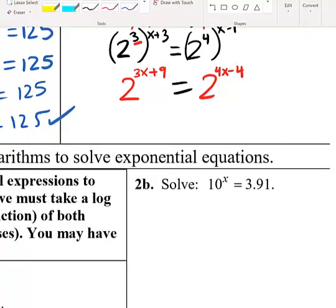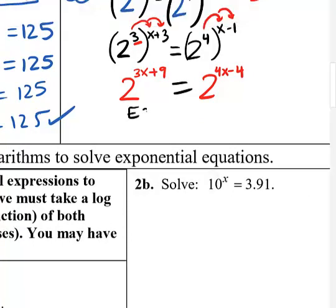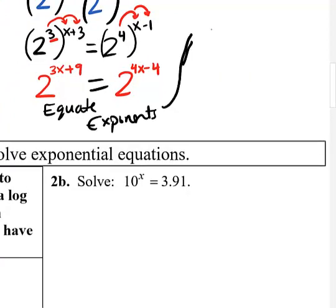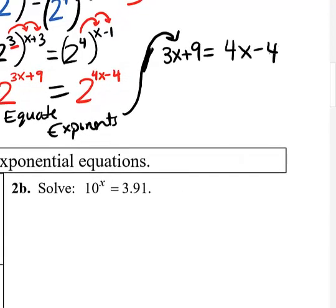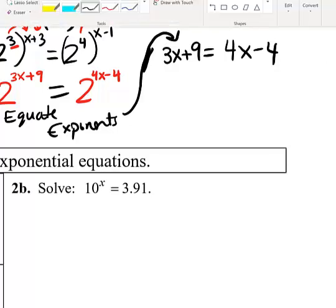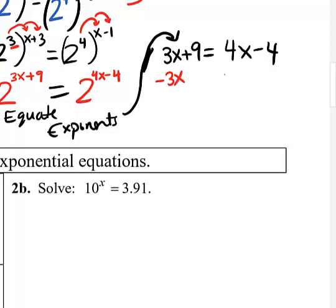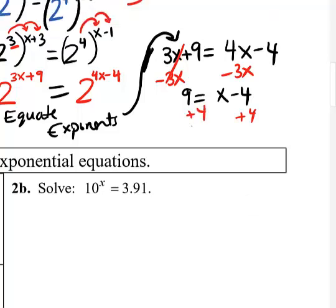Now that both sides are simplified with base 2, we equate exponents: 3x + 9 = 4x - 4. Bringing the smaller coefficient x over, we get 9 = x - 4, then adding 4 gives x = 13. This was a lot harder, so you'd want to check this one.